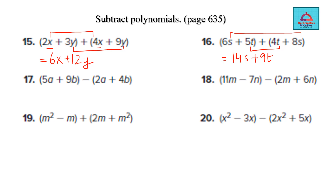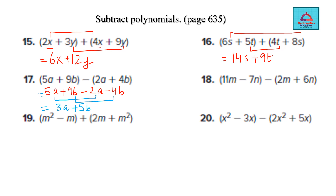Now comes subtraction. When it is subtraction, one step is added: the polynomial which is being subtracted will change sign. So it will become minus 2a minus 4b. Now you do the combination — combine the like terms and accordingly add or subtract. So 5a minus 2a gives you 3a, and 9b minus 4b gives you 5b.